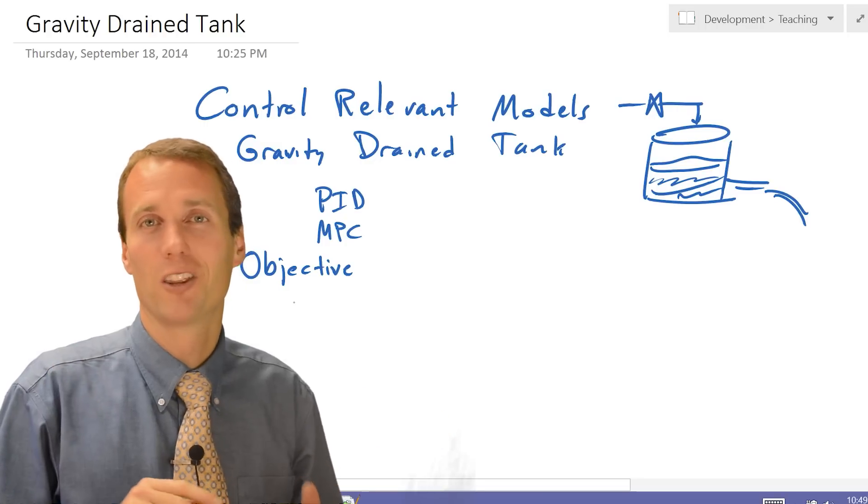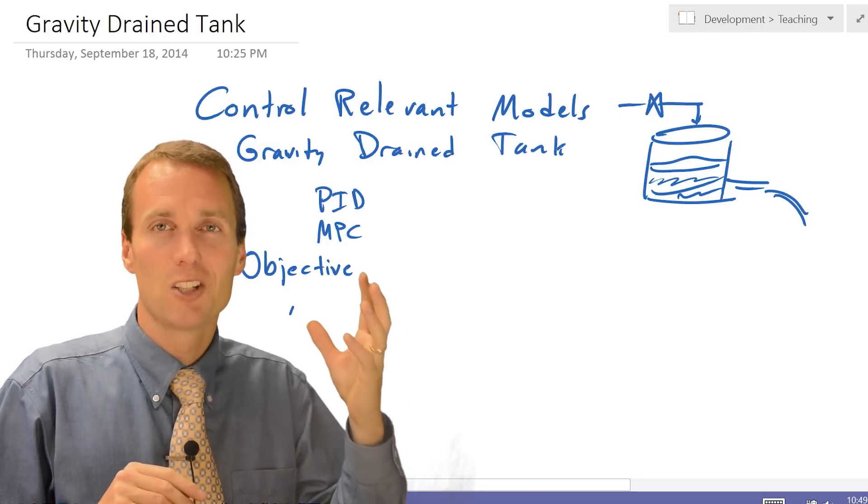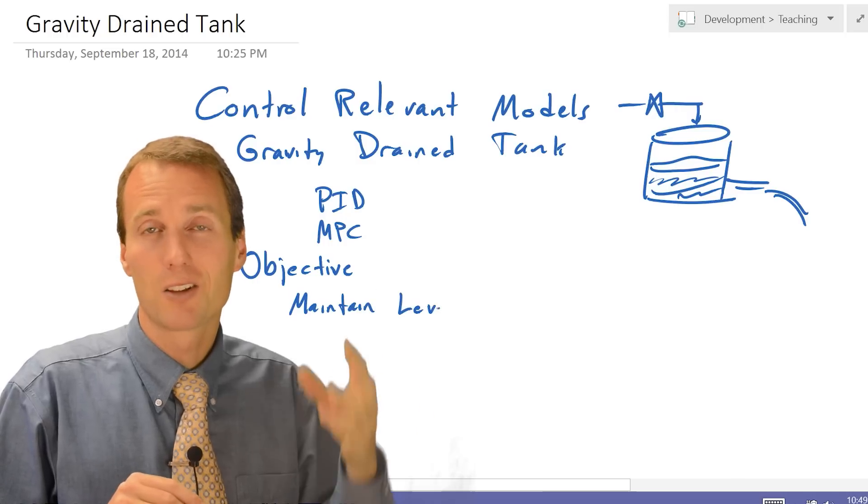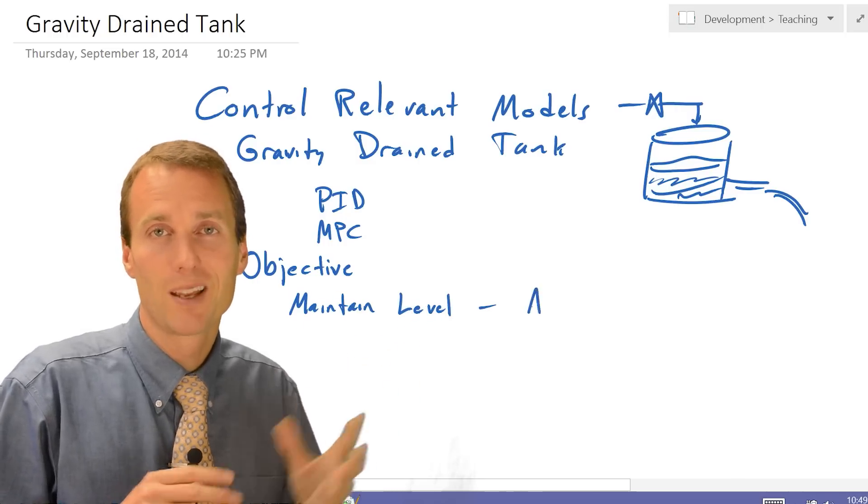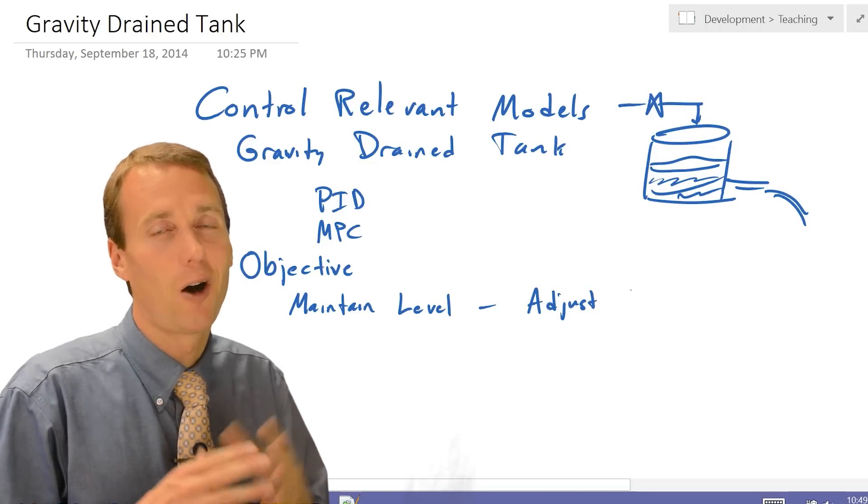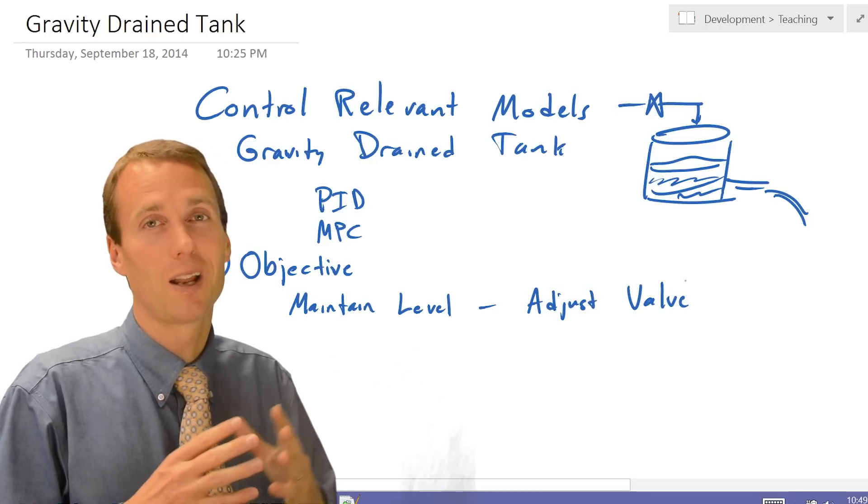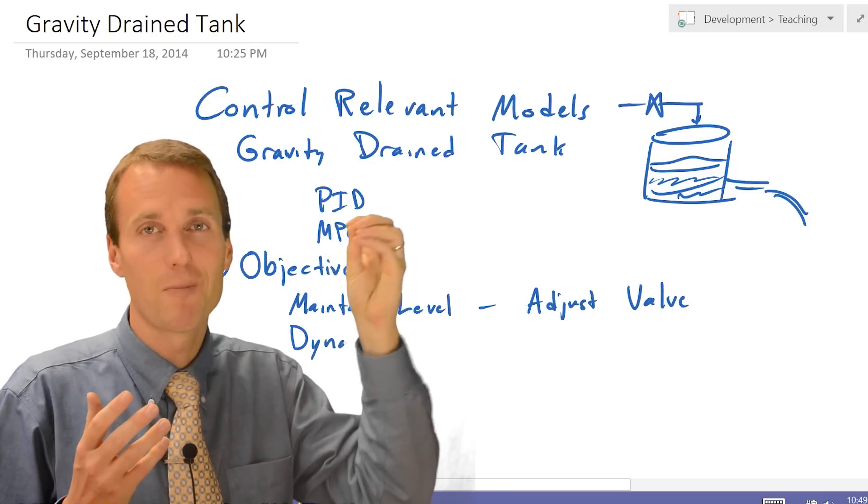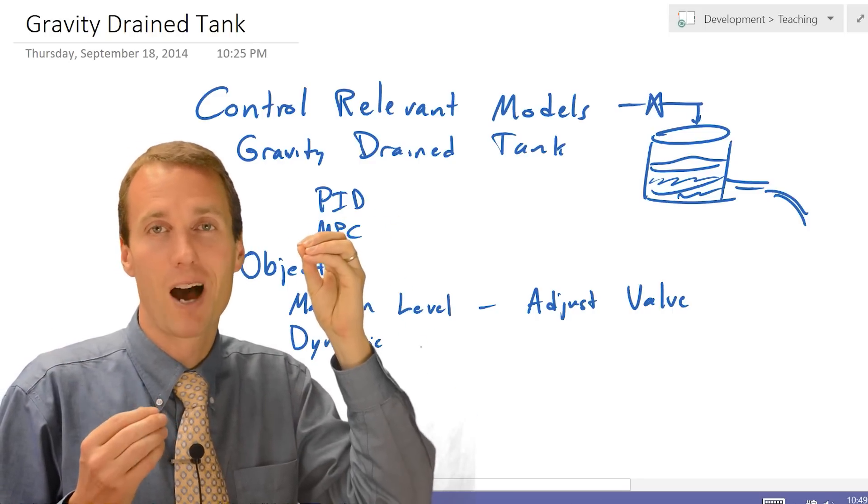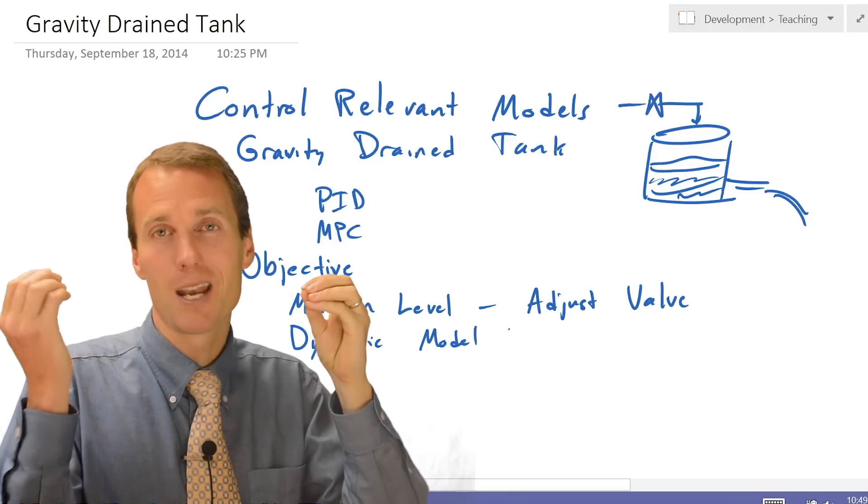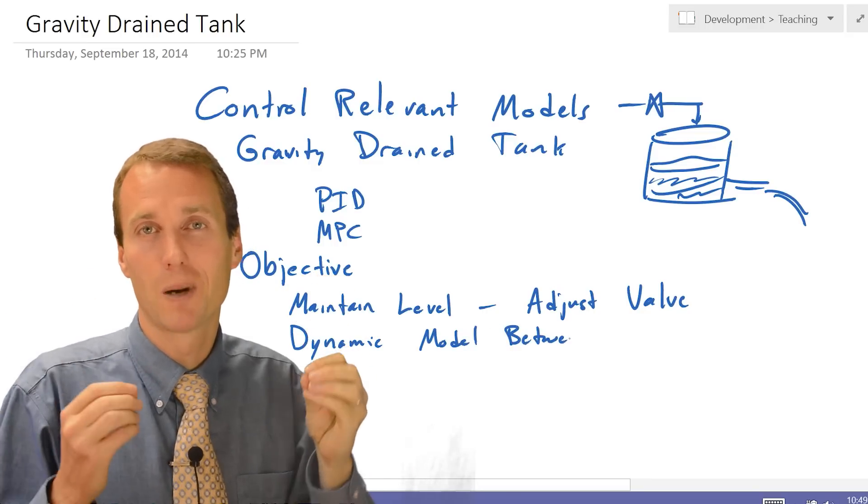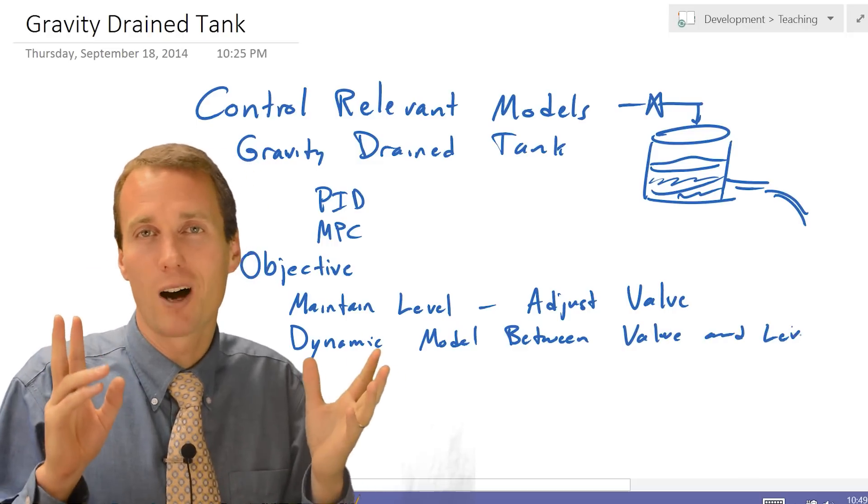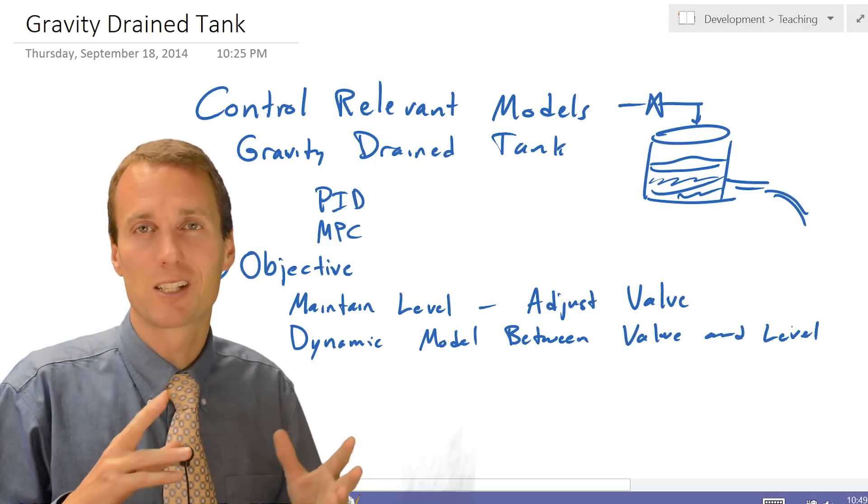And so what is our objective for this system? We want to be able to control level in the tank, and we're going to do that through adjusting the valve. Also with developing this model, we want to have a dynamic relationship between those two. As I have my input of my valve to describe dynamically how that's going to change the level in my tank. That's the very first step. The second step is to go ahead and draw a schematic of our system.